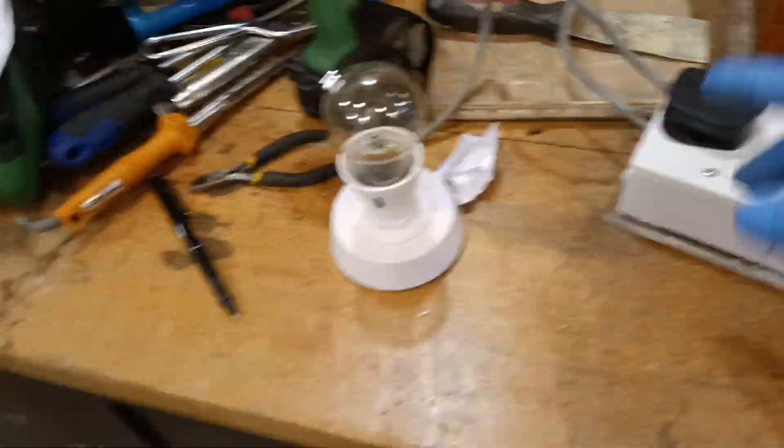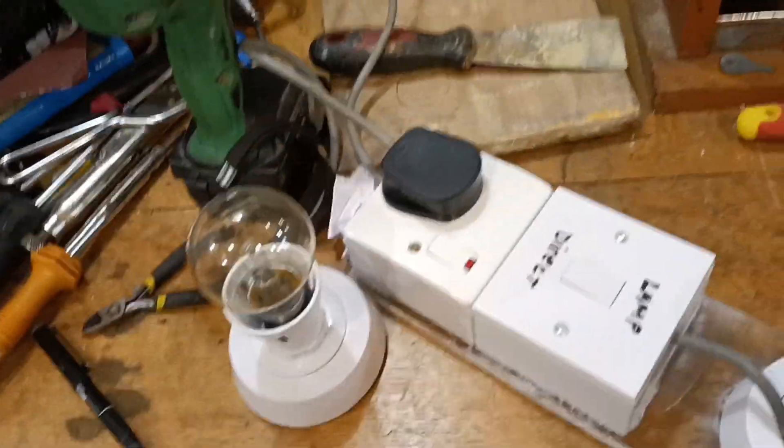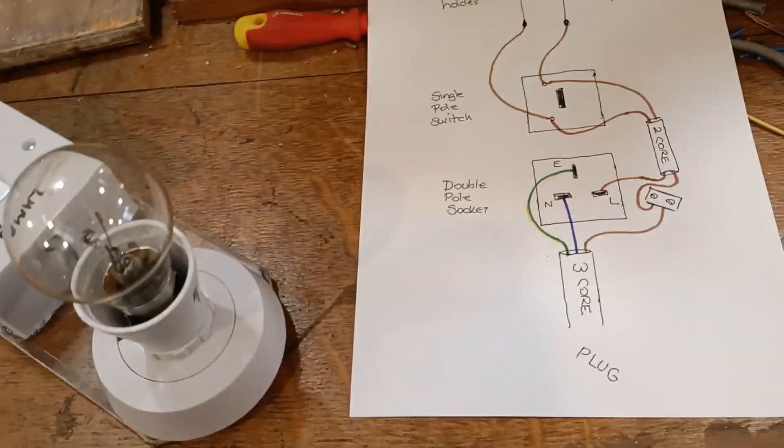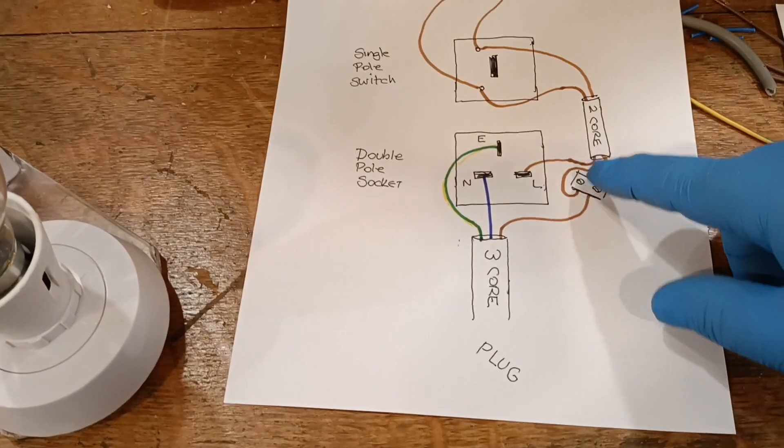that instead of running the live or line wire straight into there, so when you plug your item in it's going to get the full draw, 240 volts or 230, you're running it through here, through the lamp.